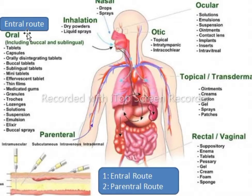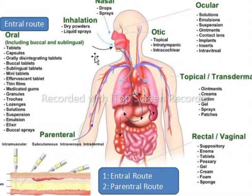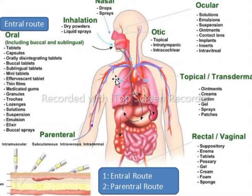What is the enteral route? In this route, the drug is administered orally and absorbed in the intestine in the form of syrup, capsule, tablets, etc. In simple words, the gastrointestinal tract is involved in this route. The second is the parenteral route, in which the entry of drugs to the body occurs in such a way that the gastrointestinal tract is not involved.